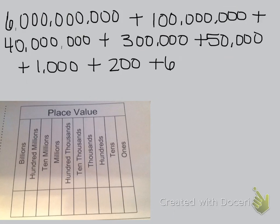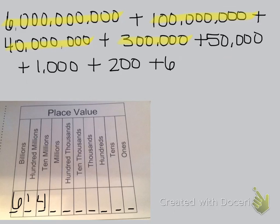Let's look at one more — this one has expanded form without the parentheses. I can see how many digits it is to figure out the place. That's a 10-digit number, so I need to come over 6 digits and put my 6 in the billions place. Plus 100,000,000. Plus 40,000,000. Plus 300,000. There was nothing times a million, so I need to put a zero there. Plus 50,000. Plus 1,000. Plus 200. Plus 6. There was nothing in the tens, so I put a zero there. So the number is 6,140,351,206.